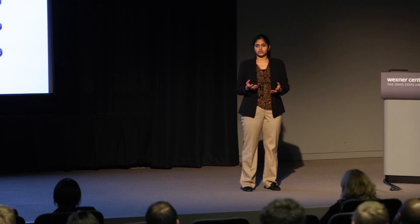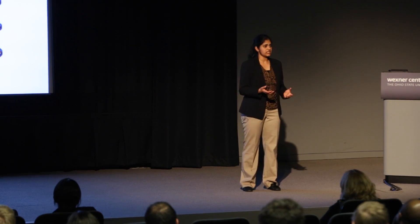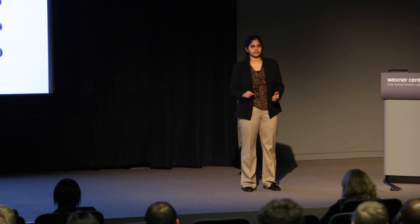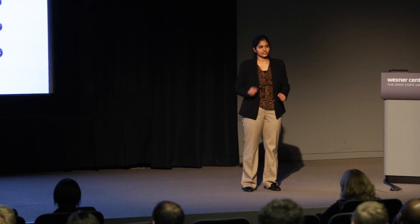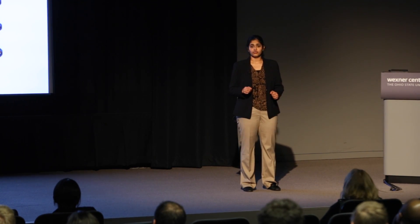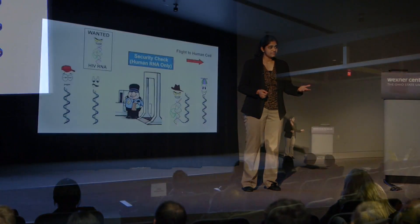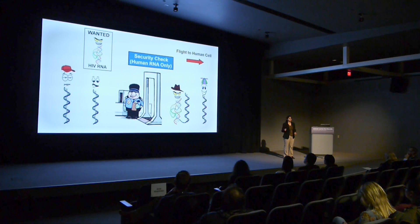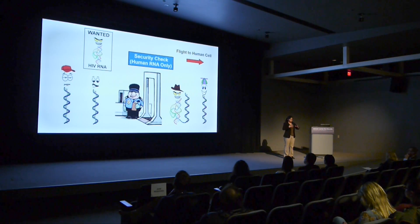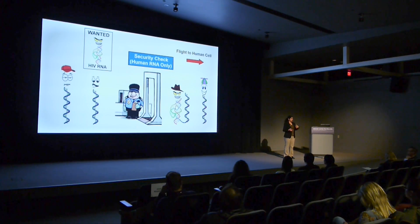Genetic information is stored in the form of DNA in almost all living organisms, but HIV is unique — it stores its genetic information in the form of RNA. RNA, like DNA and proteins, is an essential molecule found in all forms of life. HIV is able to rapidly change its RNA to avoid being detected by our immune system as well as drugs.